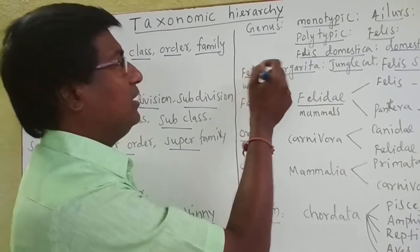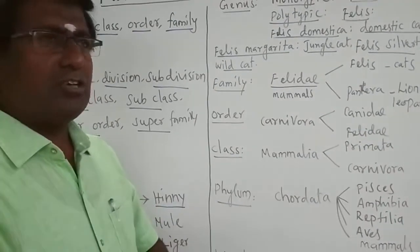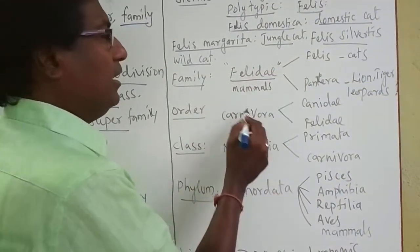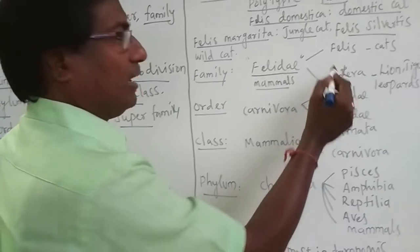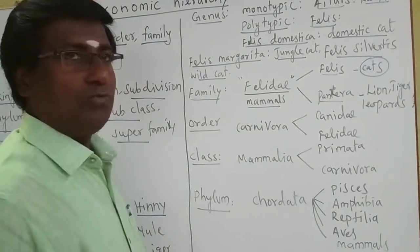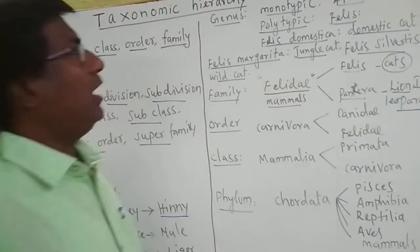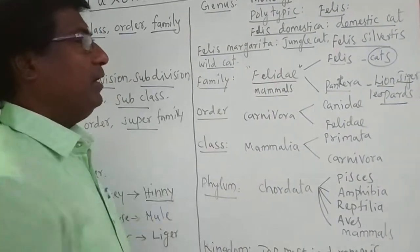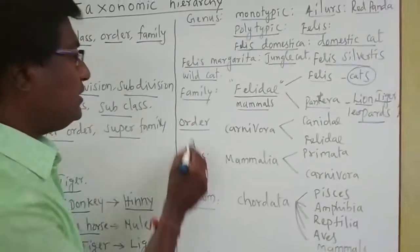The next higher category after the genus is called the family. Many closely related genera are placed in one family. For example, the family Felidae consists of all cat-like mammals. In Felidae, there are two genera: Felis, which includes the cat groups, and Panthera, which includes lion, tiger, and leopard. These two genera — Felis and Panthera — are put into the family Felidae.